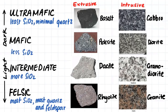We have ultramafic, mafic, intermediate, and felsic rock, and we can distinguish between these according to how light or dark the rock is. This coloration depends on how much of certain minerals is contained within the rock. For example, granite has a pink color because of the feldspar contained within it, while gabbro has quite a dark color because there is minimal quartz within the rock.